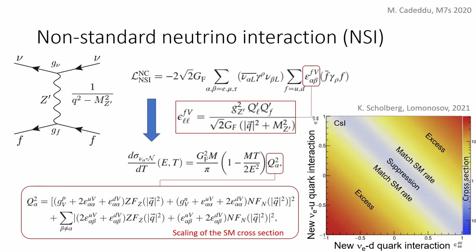Second, if the scattering is mediated by some non-standard model particle, the cross-section can be scaled up and down by a few non-standard neutrino interaction parameters, or NSI parameters. If we plot the cross-section as a function of two NSI parameters, at some parts of the parameter space the cross-section is enhanced, and at others it is suppressed. The precise measurement of the CEvNS cross-section would tell us something about the NSI.